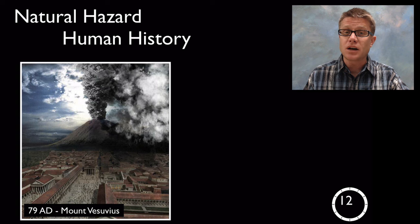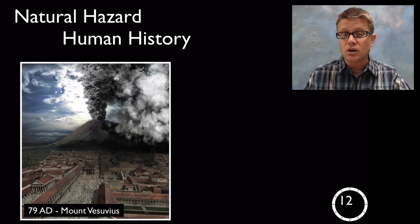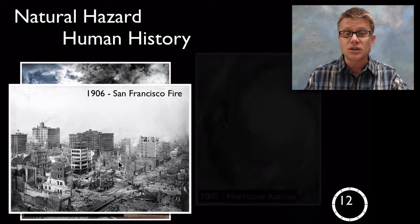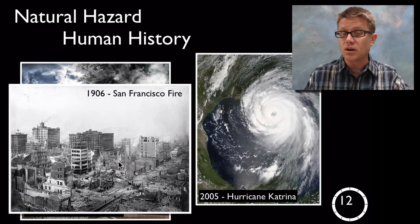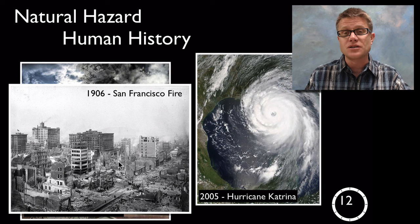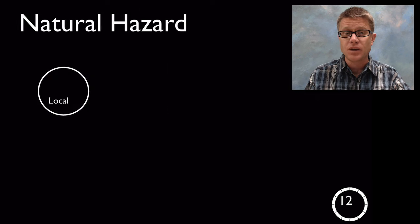As students move into high school, you want them to understand that natural hazards are just a part of human history — they've occurred through time. This includes the eruption of Mount Vesuvius which covered the city of Pompeii, the 1906 San Francisco earthquake, and Hurricane Katrina in 2005. We'll continue to have natural disasters caused by natural hazards into the future — we just have to prepare for them and be able to predict them.